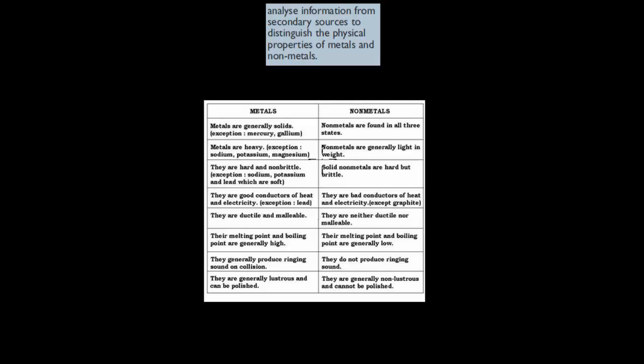So here all we have to look at is this table. Here we have our metals. Here we have our non-metals. And this is actually distinguishing. So this table helps us distinguish the different physical properties of metals compared to non-metals.